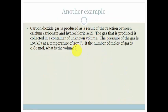It says carbon dioxide gas is produced as a result of reaction between calcium carbonate and hydrochloric acid. The gas that is produced is collected in a container of unknown volume. The pressure of the gas is 105 kilopascals, the temperature is 20 degrees Celsius, and the number of moles of gas is 0.86. And they're asking you what is the volume. So again, let's write down all our variables: P, V, N, R, T.